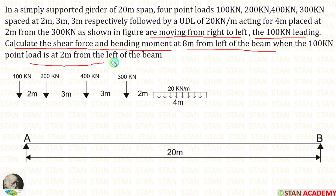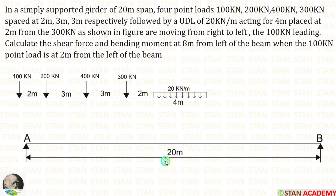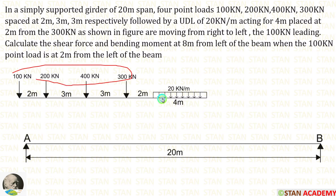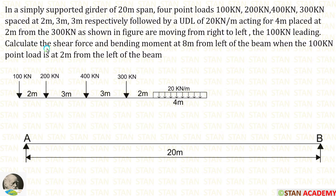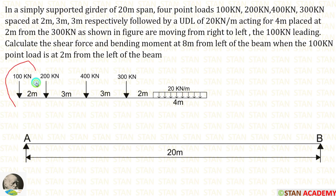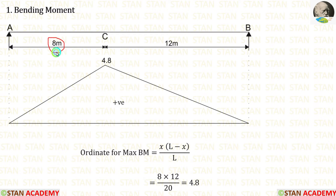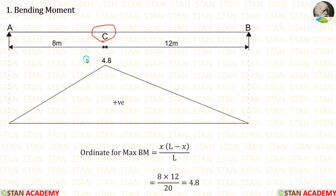When the 100 kN point load is at 2 m from the left of the beam. The length of the beam is 20 m. Four point loads and a UDL are given; these loads are moving from right to left with the 100 kN load leading. We have to calculate the shear force and bending moment at 8 m from the left of the beam. At 8 m from the left, let us mark point C, where we need to calculate the bending moment and shear force.